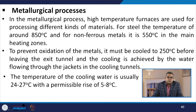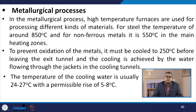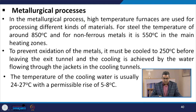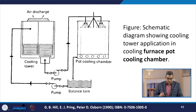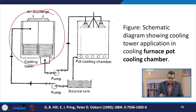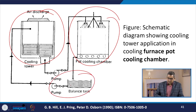For metallurgical processes, high temperature furnaces are used for processing different materials. For steel the temperature is around 850°C and for non-ferrous materials around 550°C in the main heating zone. To prevent oxidation, the metal must be cooled to 250°C before leaving the exit tunnel, achieved by water flowing through jackets in cooling tunnels. The cooling water temperature is roughly 24 to 27°C with a permissible rise of 5 to 8°C, as shown in the schematic diagram with a pre-cooling chamber and balanced tank.